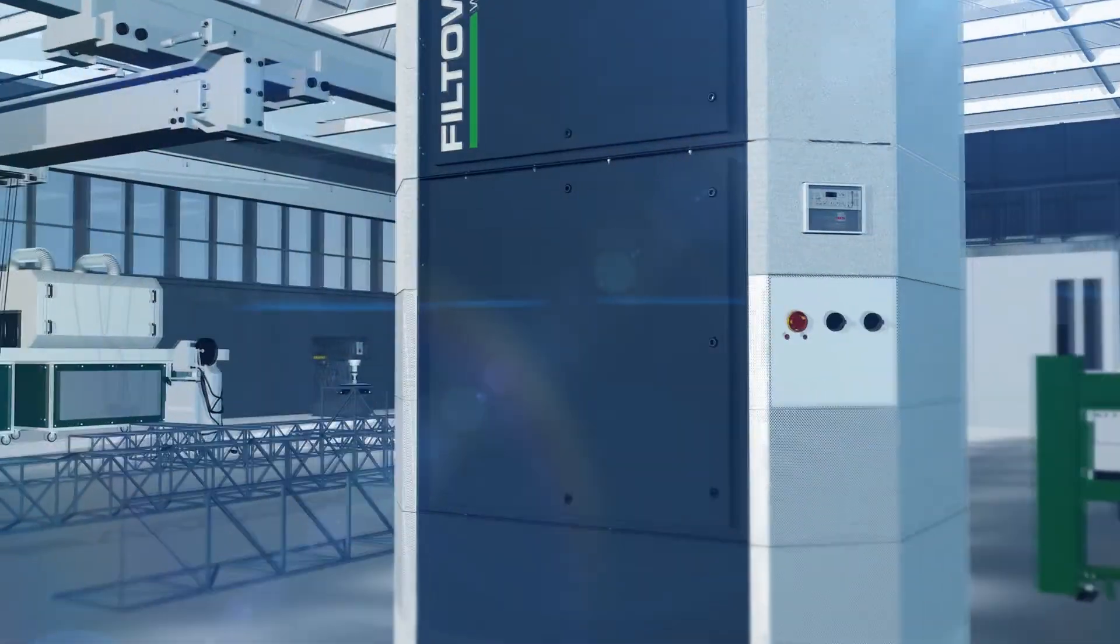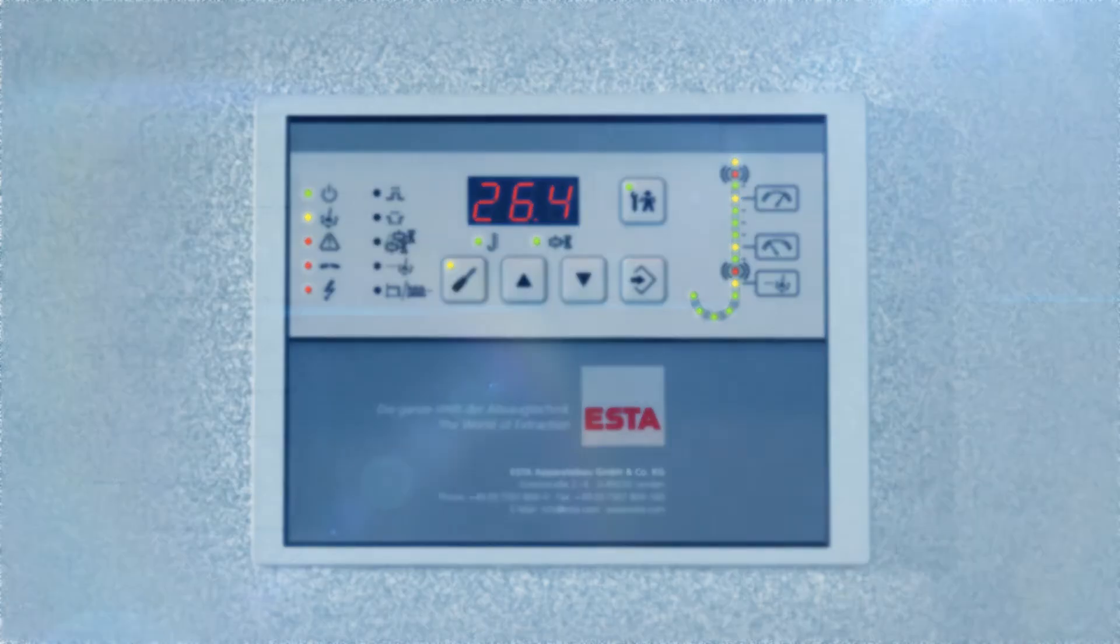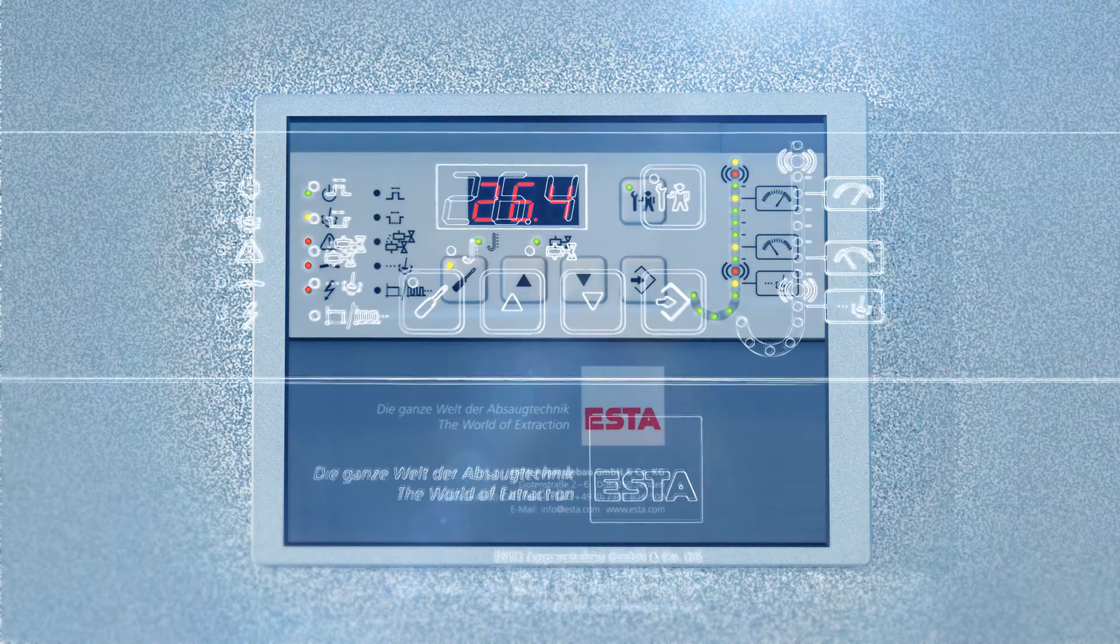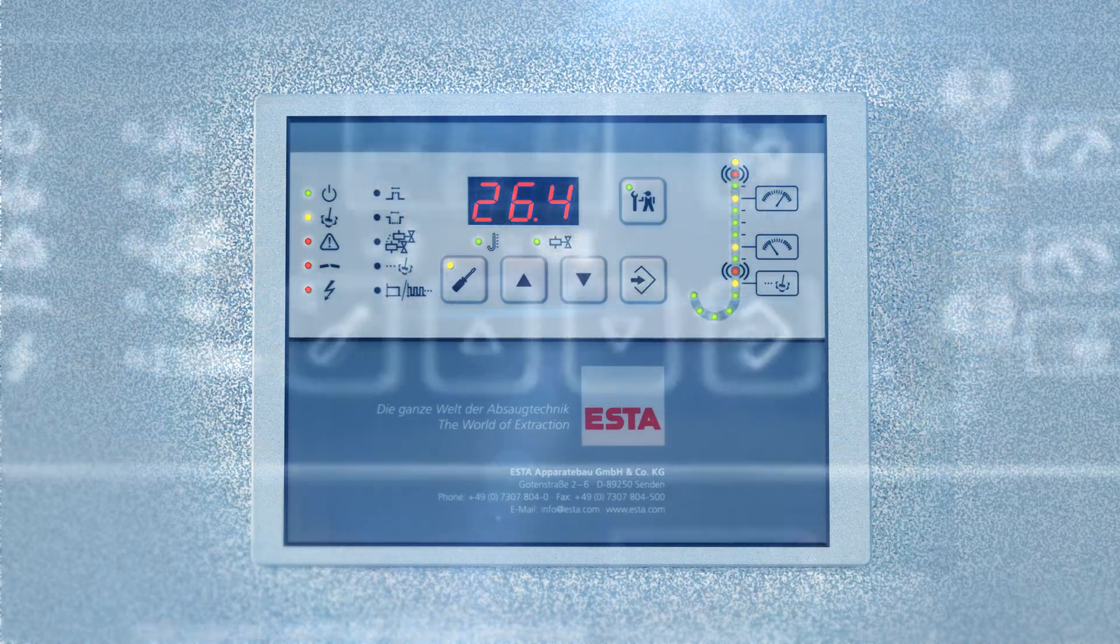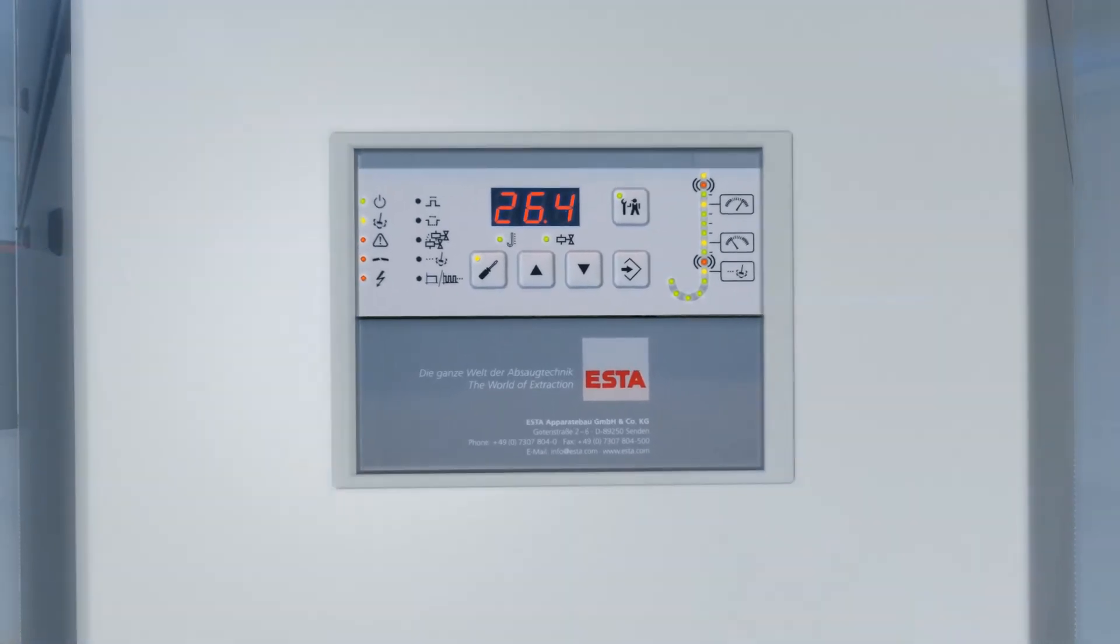The system control unit offers a comprehensive operating panel which can be used to display and set the most important operating parameters and device functions. All systems are also available in the Eco Plus version with a control concept that achieves energy savings of up to 50 percent.